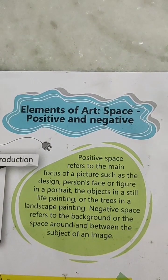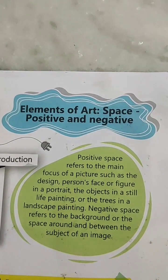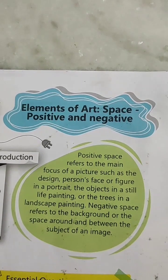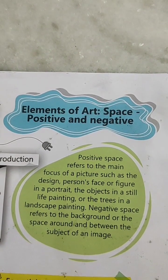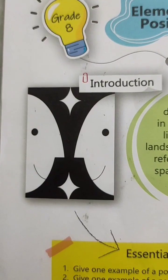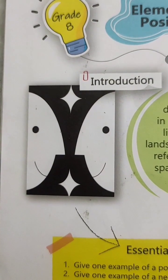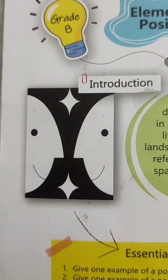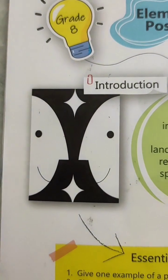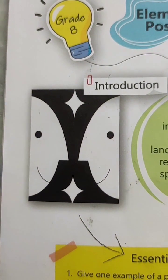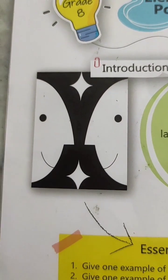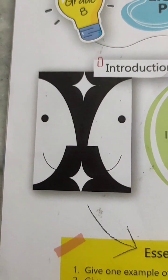We are going to make a painting on the topic 'elements of art: space, positive and negative.' Positive means white color and negative means black color. Positive space is done using white color and negative space is done using black color, as shown in this beautifully done example.